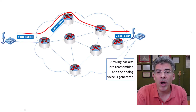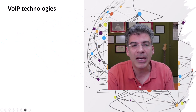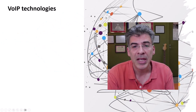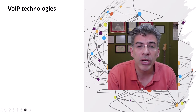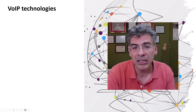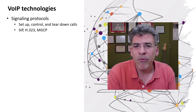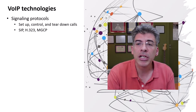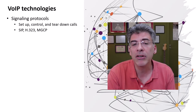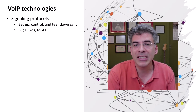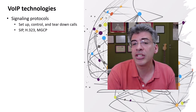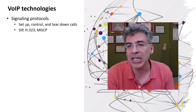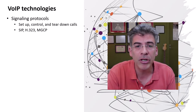Now, voice over IP requires certain technologies to make all of this a reality. These technologies include things like signaling protocols. VoIP requires signaling protocols to set up, control, and tear down calls. They handle tasks such as ringing remote phones, establishing call parameters, and managing call initiation and termination.